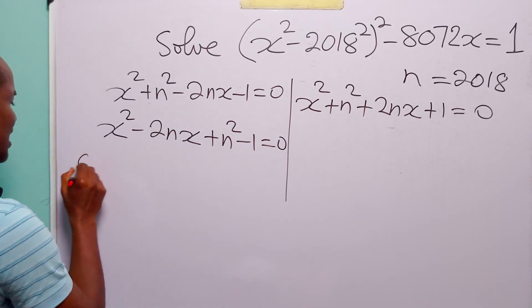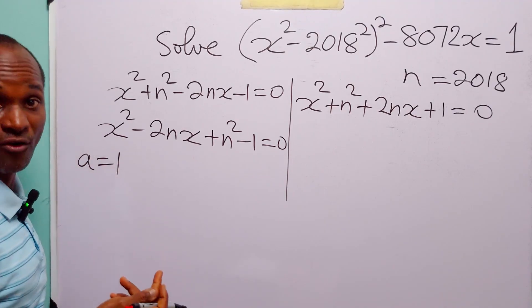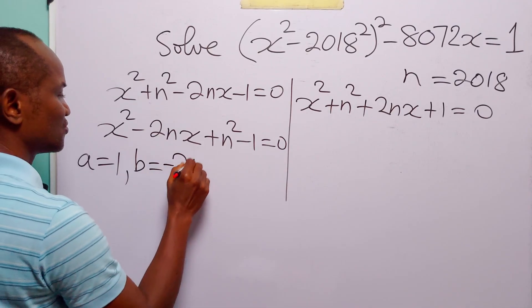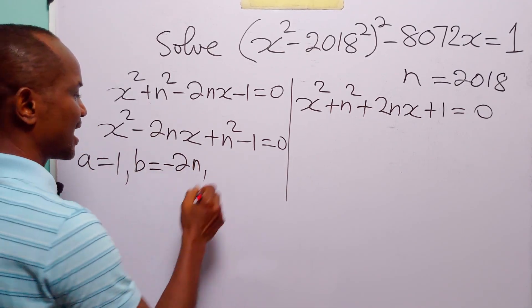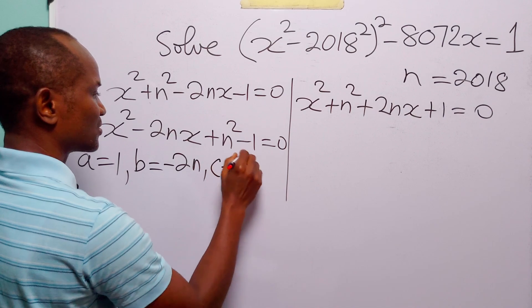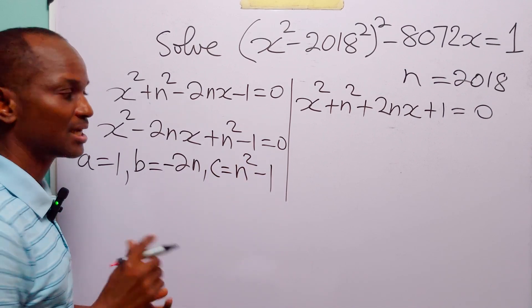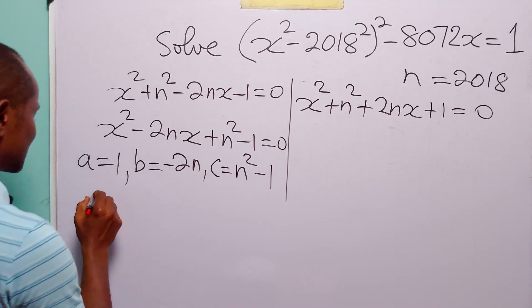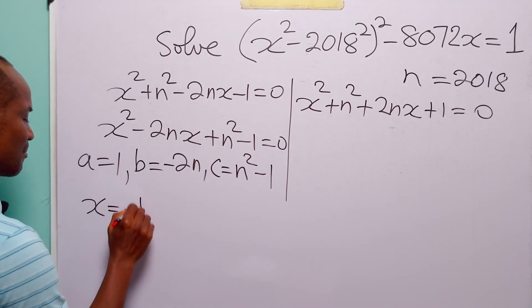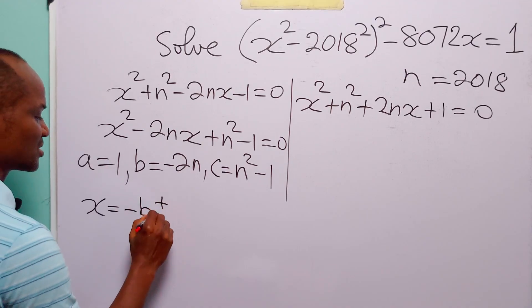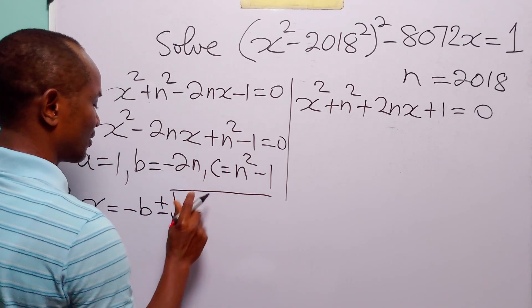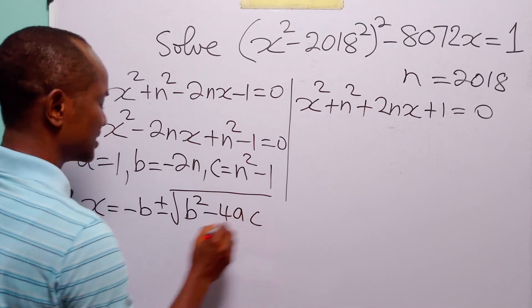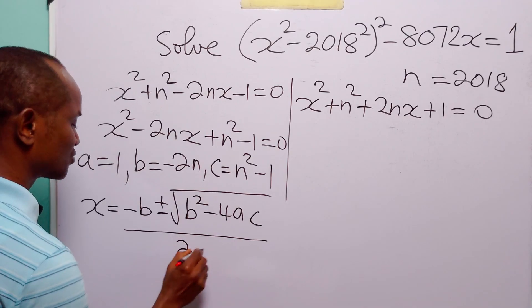From this equation, a = 1 (the coefficient of x²), b = −2n (the coefficient of x), and c = n² − 1 (the constant term). We can solve using the quadratic formula: x = (−b ± √(b² − 4ac)) / (2a).